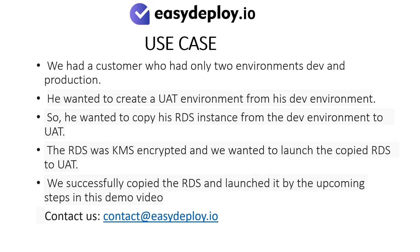Use Case: We had a customer who had only two environments, dev and production. He wanted to create a UAT environment from his dev environment, so he wanted to copy his RDS instance from the dev environment to UAT. The RDS snapshot was KMS Encrypted and we wanted to launch the copied RDS to UAT. We successfully copied the RDS and launched it by the upcoming steps in this demo video.